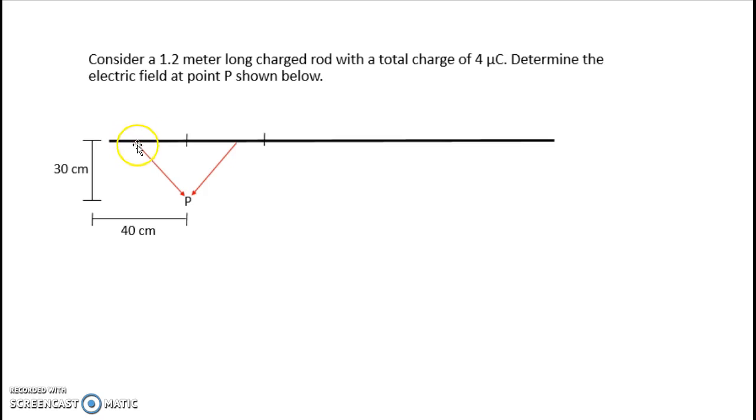For every point to the left of P on the rod, there's a symmetric point to the right of P whose electric field contributions, their vertical components will add together, but their horizontal components will cancel out. So for this little segment of rod here, I can see that the left and right components will cancel out.